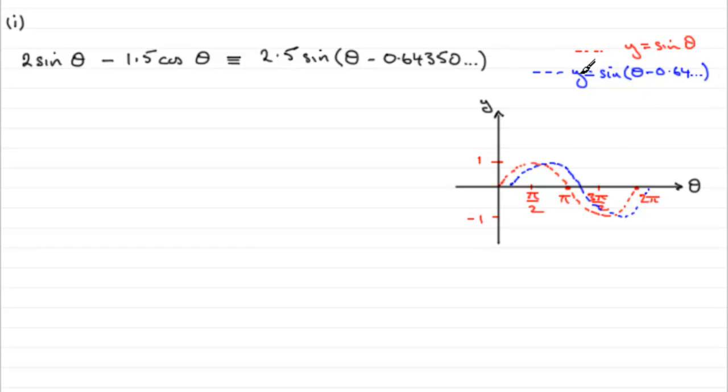Now, once we've got that graph, we multiply this by 2.5. And that has the effect of stretching this blue graph now by a factor of 2.5. With these points on the, what would normally be the x-axis, but the theta axis here, they stay invariant.